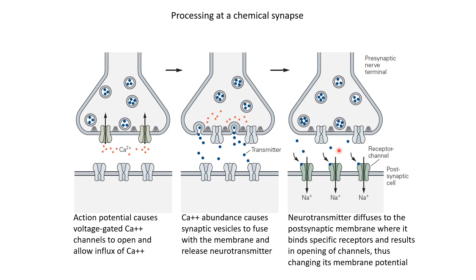Once the neurotransmitters are in the synaptic cleft, they diffuse through the extracellular medium and probabilistically bind to receptors on the postsynaptic side. These receptors are directly or indirectly connected to various ion channels. As these channels open, they allow movement of ions into the cell. Depending on the types of ions that move in — for example, if sodium ions move in, they cause depolarization; other ion types may cause hyperpolarization — this is how we get a change in the membrane potential of the postsynaptic neuron. So a change in membrane potential at the presynaptic neuron triggered by an action potential can result in a change in membrane potential at the postsynaptic neuron.